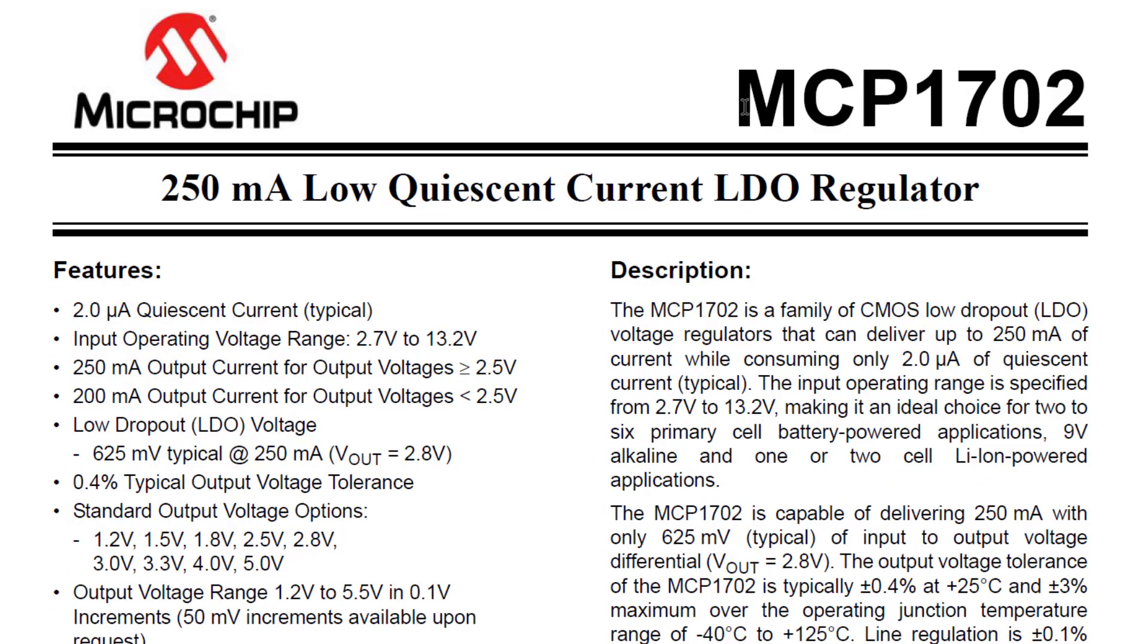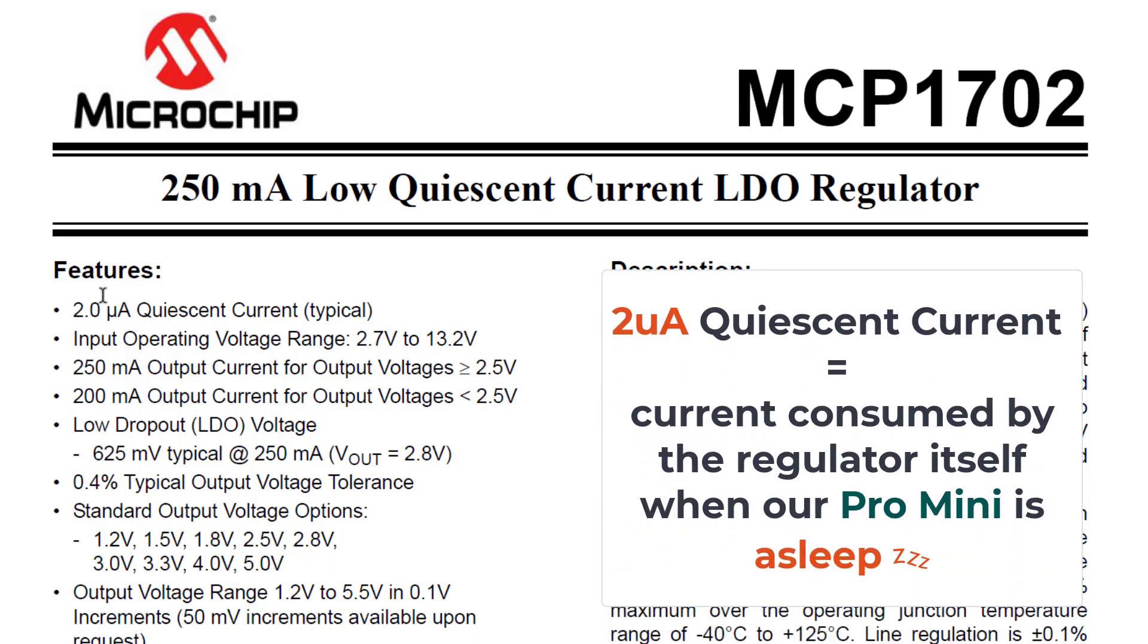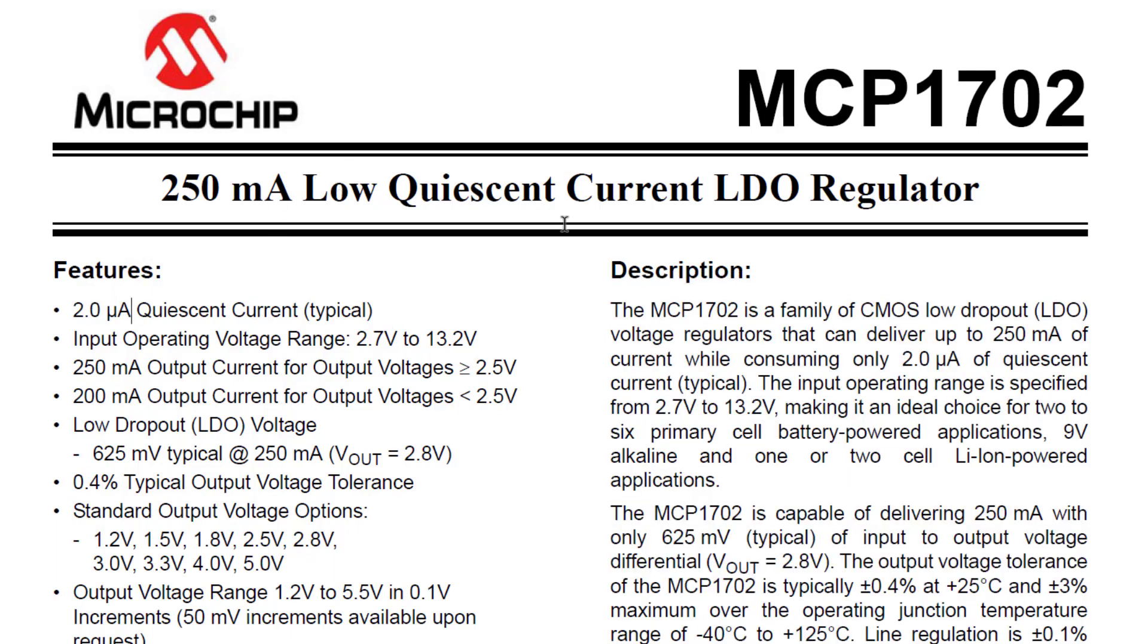If we take a look at the MCP1702, we can see that it's a 250 milliamp low quiescent current regulator. And by quiescent current, we mean the amount of current it consumes when it's idle. And that value is 2 microamps, which is significantly low. So this is a much better regulator for our Pro Mini. So let's go ahead and set up this regulator and measure the current values again.